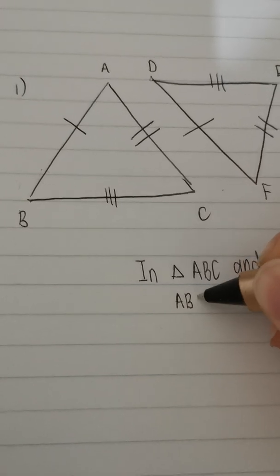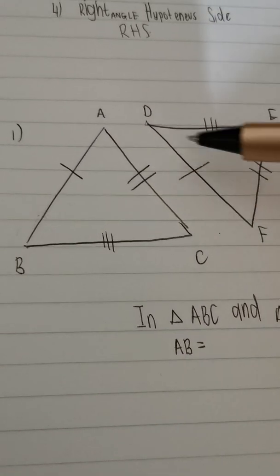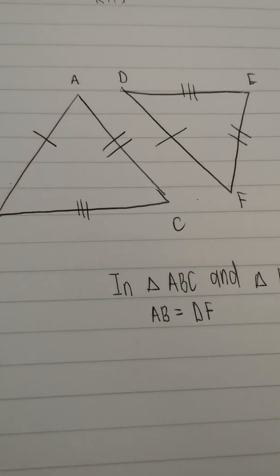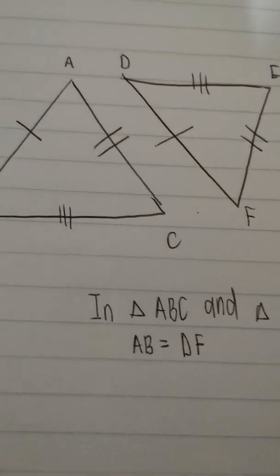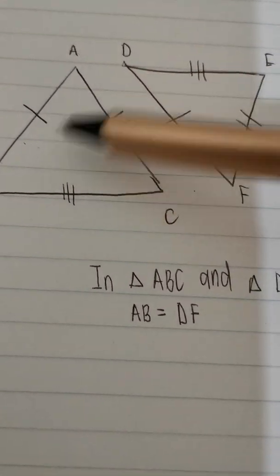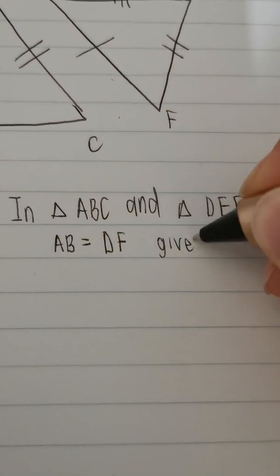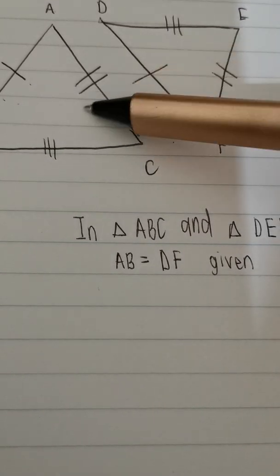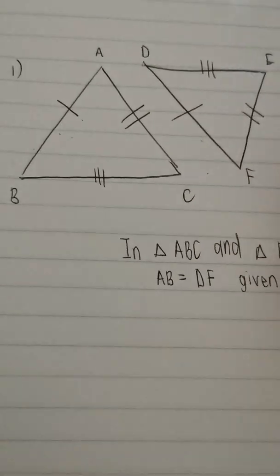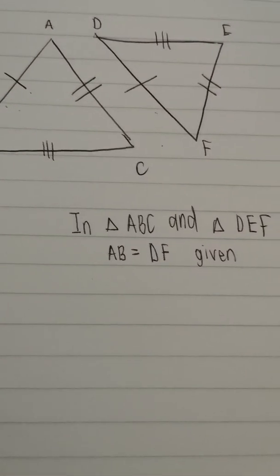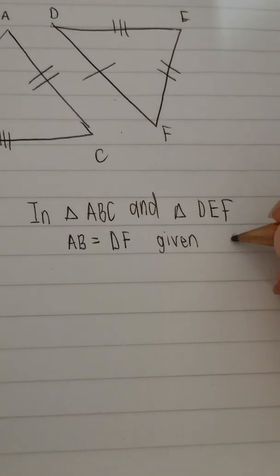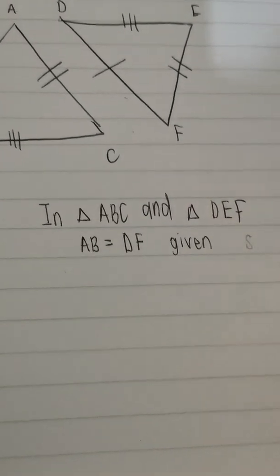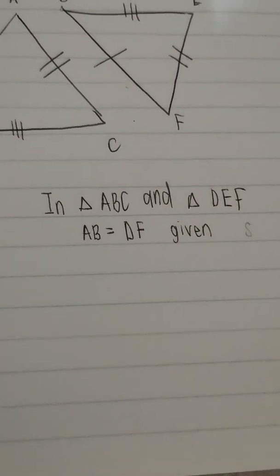You're going to list something in one triangle and match it to something in the other triangle. So I'll list that AB is equal to DF. Now, remember, everything in geometry needs a reason. How did we get this information? Because it was given to us, we list the reason as 'given.' I put a small letter S next to it so I know I'm talking about a side, and it makes it easier to write the reason at the bottom.